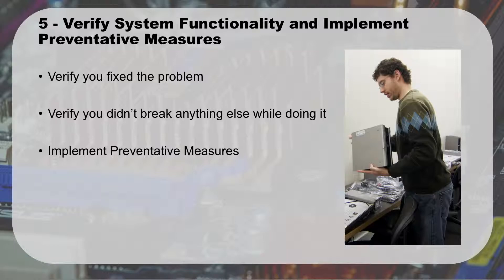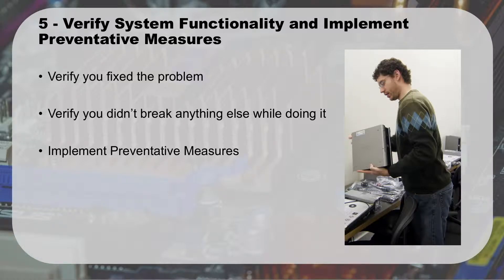In step five, we implement the fixes, then verify the problem has been fixed. In our case, if the internet wasn't working and we had an APIPA address, we might run 'ipconfig /release' to drop that IP address, then 'ipconfig /renew' to get a new one. Then verify: can I get online? Can I get to Facebook? Is everything still working? Sometimes fixing one thing can overwrite other files, so make sure with the customer that everything is working properly before you leave. Also implement preventive measures — for example, if a customer got a virus, give them training on avoiding viruses, update their antivirus, or set up a good backup system.